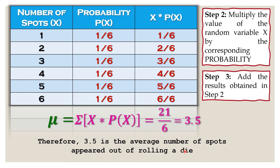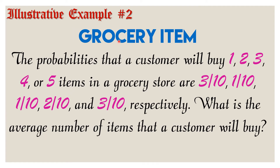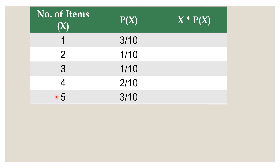I hope you followed the steps. Next, example number two. The probabilities that a customer will buy one, two, three, four, or five items in a grocery store are three over ten, one over ten, one over ten, two over ten, and three over ten respectively. The question is: what is the average number of items that a customer will buy? Doing the same process as the previous example, here is the probability distribution table. The second step is to multiply the variable x to its corresponding probability. One times three over ten: we simply multiply the whole number to the numerator and copy the denominator.